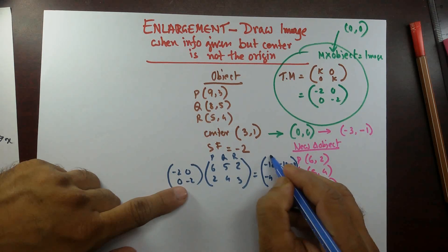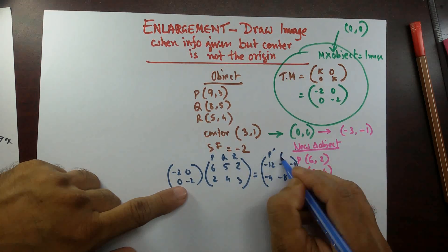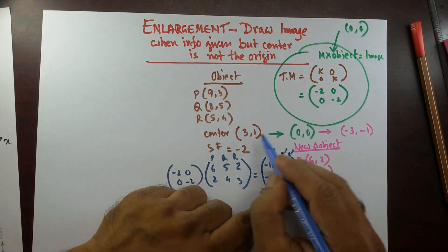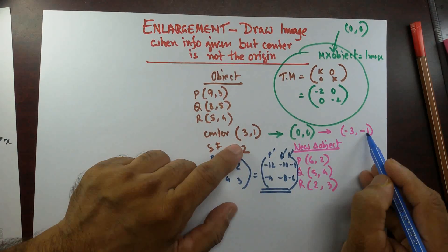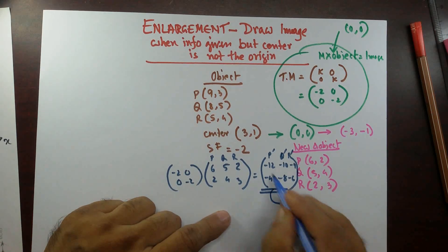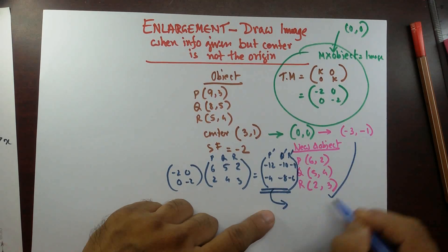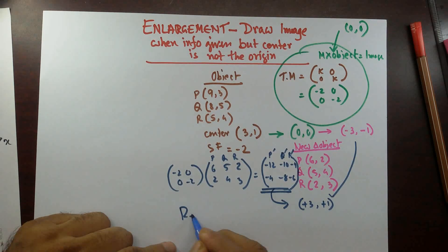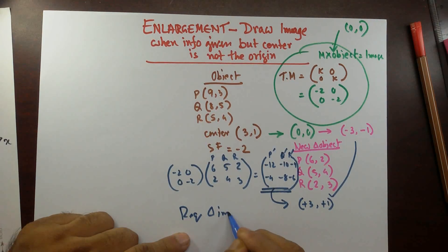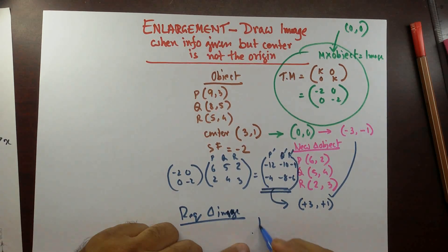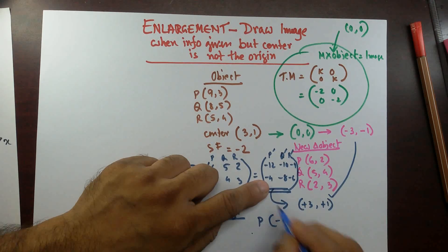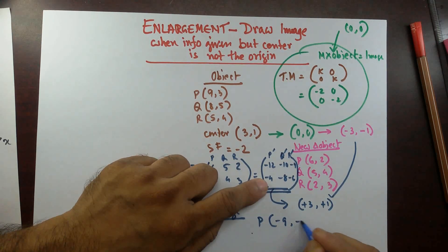These coordinates are not the required image yet, because I subtracted 3 and 1 from the center. So for every point, I add back plus 3 to the x-coordinates and plus 1 to the y-coordinates. The required image coordinate for P' is: −12+3 = −9 and −4+1 = −3, giving P'(−9, −3).